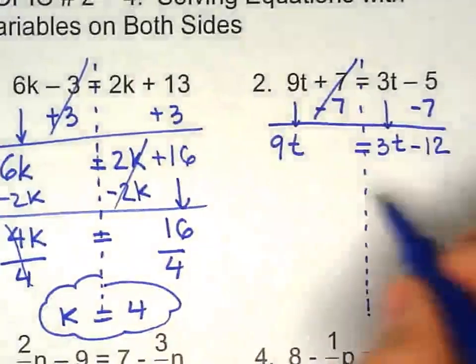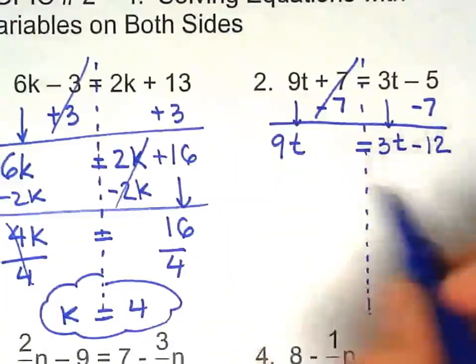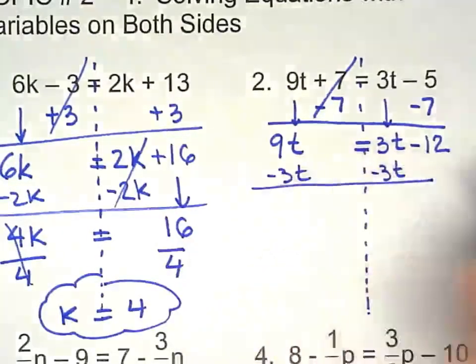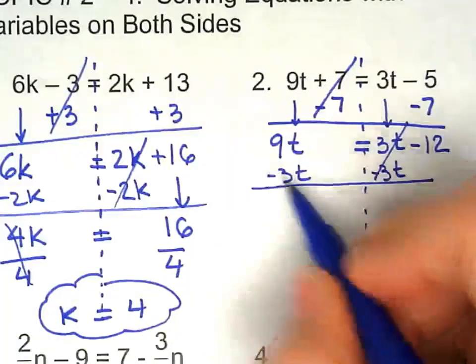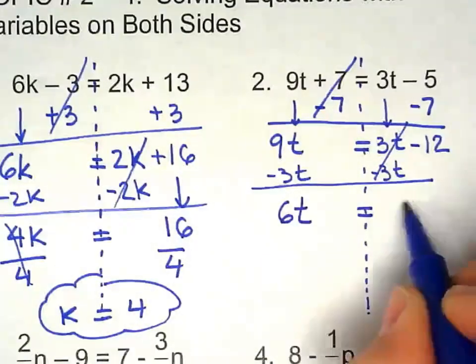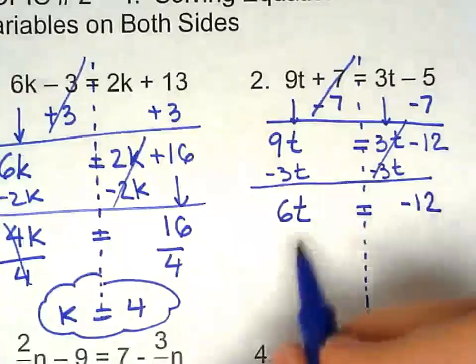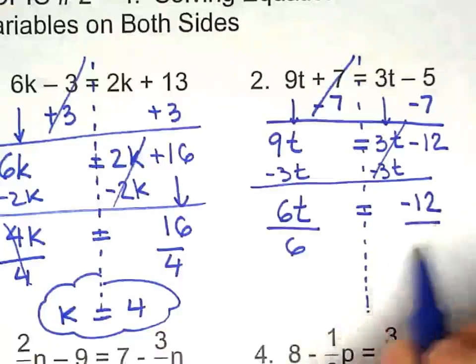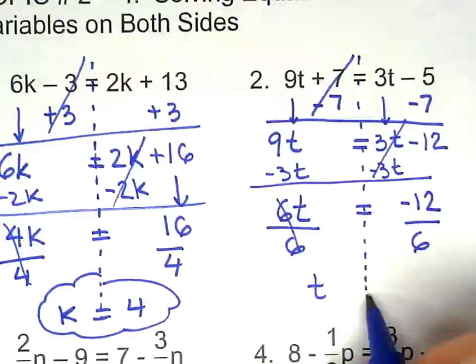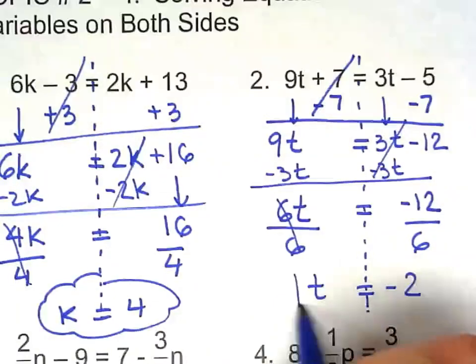Right there. Now t needs to go on the left. So I take away 3t from both sides. 9 take away 3 is 6. Bring negative 12 down. Now we just have to divide by 6. Positive 6. Bring t. Equals negative 12 divided by 6. Negative 2.